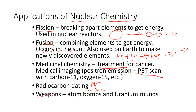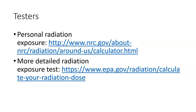Another thing that often comes up is how do we test radiation exposure. There are a variety of ways to do this. There's a personal radiation exposure calculator through the Nuclear Regulatory Commission, and another one through the Environmental Protection Agency. A variety of different agencies and groups provide radiation calculators, and I suggest taking a moment to go through some of these, because things people tend to think are big sources of radiation often aren't.